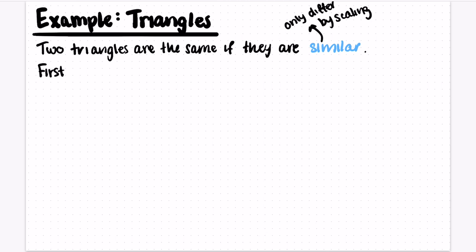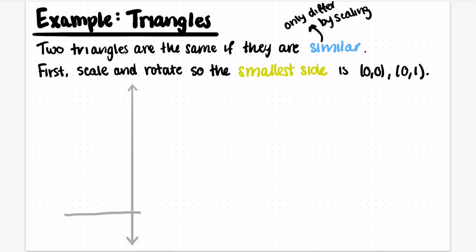How do we make a moduli space of triangles? We need to figure out how to take each triangle and sort of scale it and rotate it into some fixed position so that we can compare two triangles to see when they're similar.